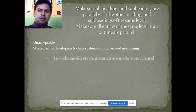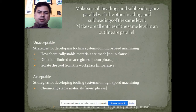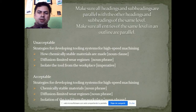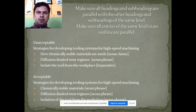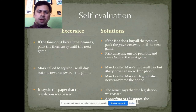Make sure headings and sub-headings are parallel with other headings and sub-headings at the same level. Unacceptable: 'Strategic or development tooling system for the high-speed mechanic. How chemical-stable materials are made. The force on limited wheel regiments insulates the tool from the workplace.' Acceptable: 'Accessible development tooling system for high-speed machining. Chemical-stable material. The force on limited wheel regiments insulates the tool from the workplace.'